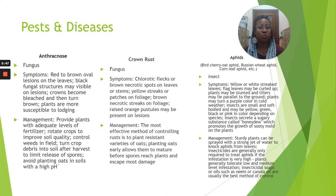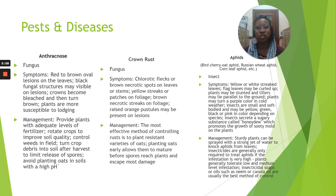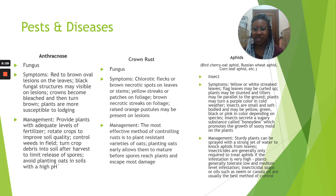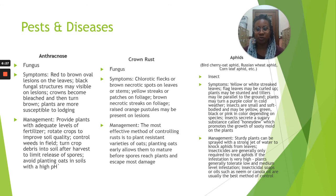Next, pests and diseases — these are three of the most common ones. If you have questions or would like to know others, feel free to email me at the address given at the end of this presentation. First, anthracnose, which is a fungus. Symptoms include red to brown oval lesions on the leaves, black fungal structures visible on lesions, crowns that become bleached and turn brown, and plants more susceptible to lodging. Management: provide adequate levels of fertilizer, rotate crops to improve soil quality, control weeds in the field, turn crop debris into soil after harvest to limit spore release, and avoid planting oats in soils with a very high pH.